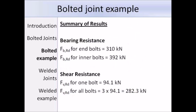In summary: the bearing resistance of the end bolts is 310 kN, the bearing resistance of the inner bolts is 392 kN, and the shear resistance of all three bolts is 282.3 kN. Therefore the resistance of the joint is governed by the shear resistance, since that is the critical value. That is the end of this section — Part 1 of this lecture on joints. The next section will be dealing with welded joints. Thank you.